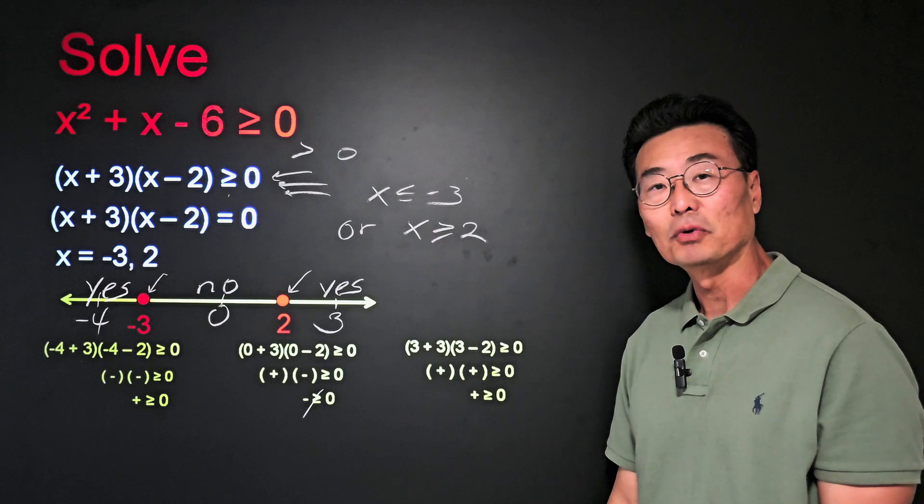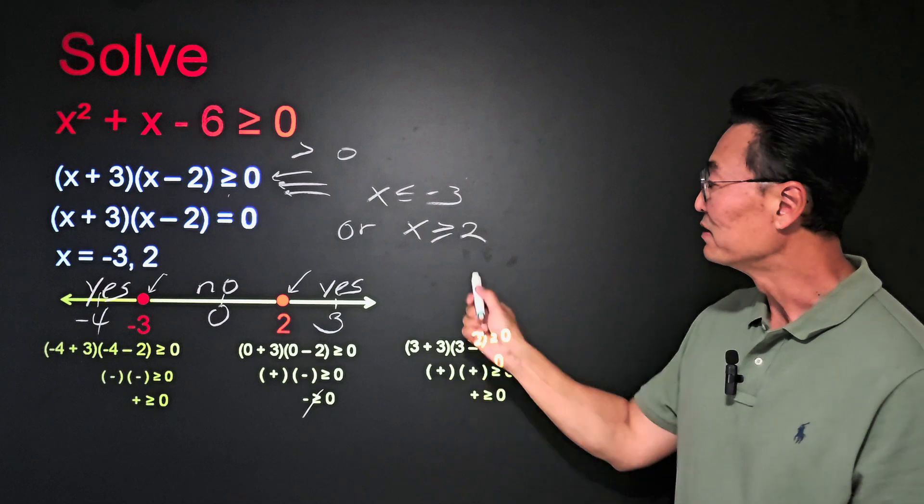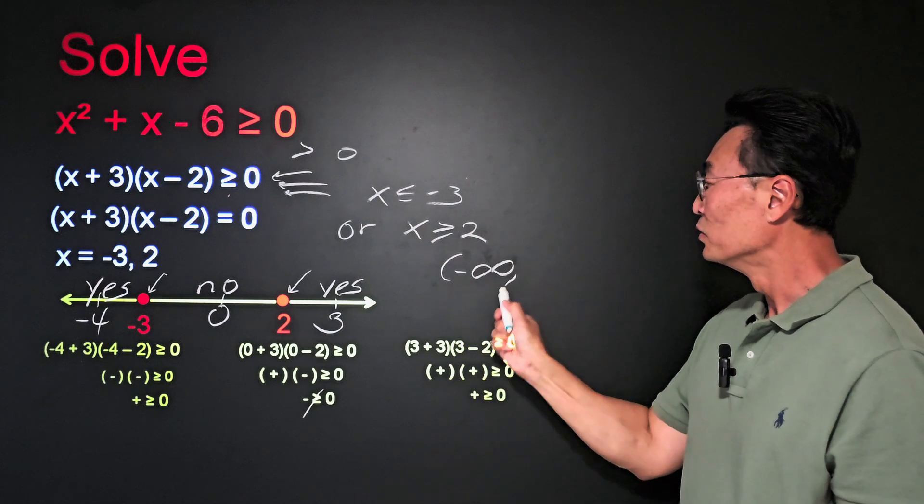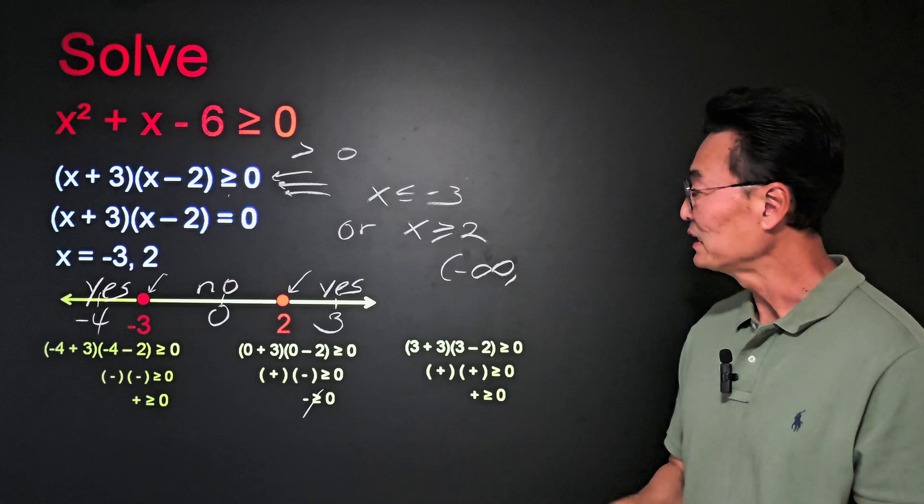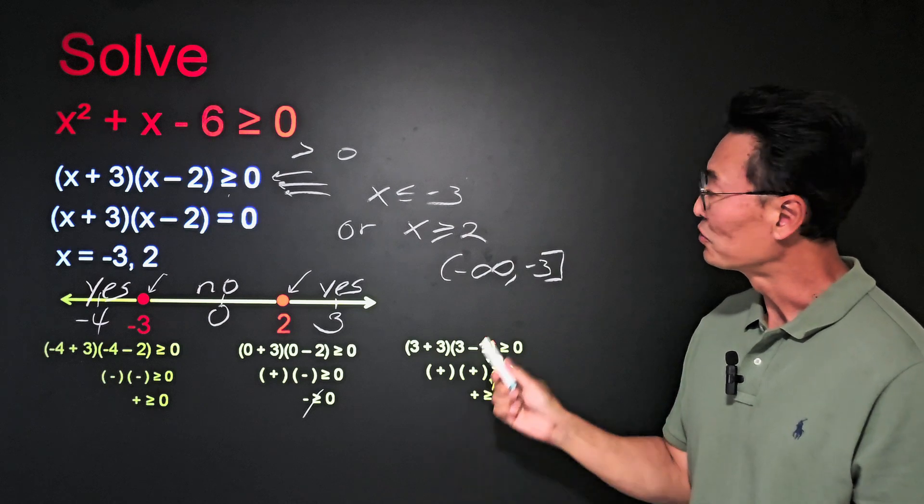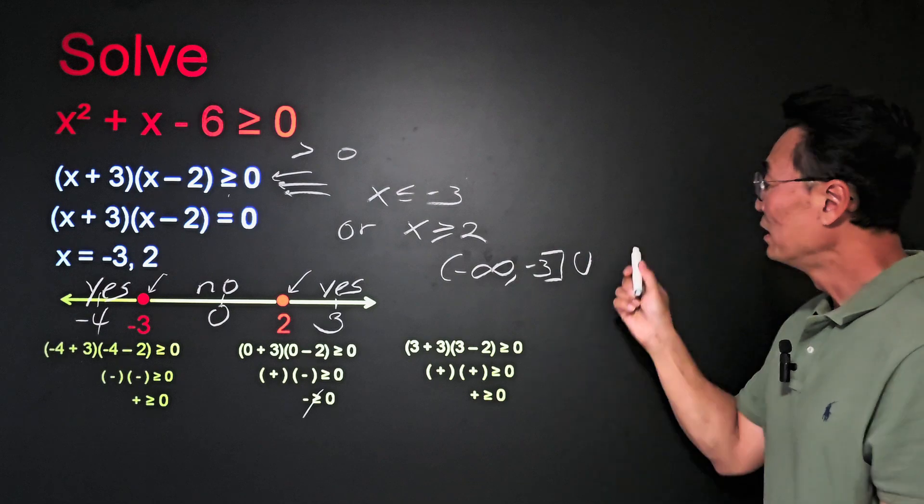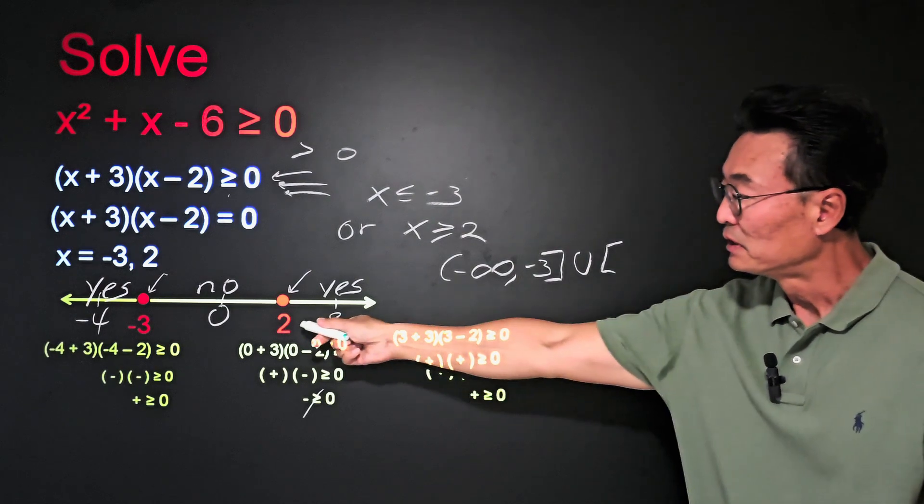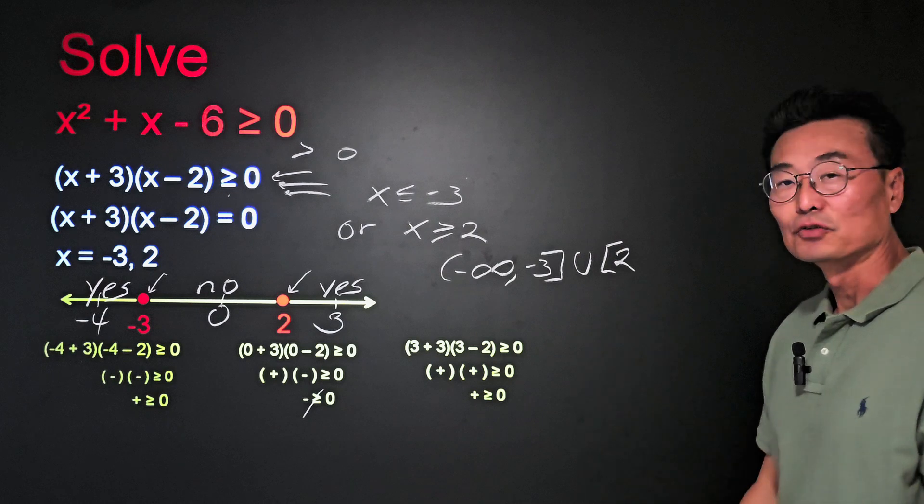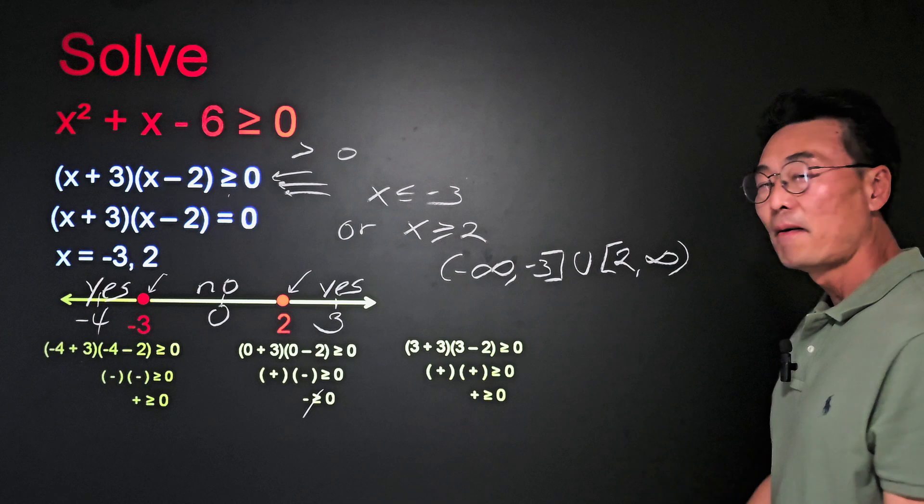And as an additional bonus, we could rewrite this in the interval notation, and the way to do it is negative infinity, notice the parentheses on the left side, comma up to negative 3, bracket, because it includes the number negative 3, union, bracket 2, because again, it includes the number 2, comma, positive infinity, parentheses.